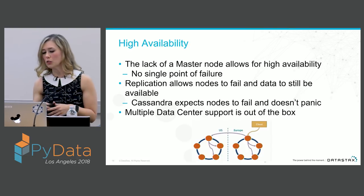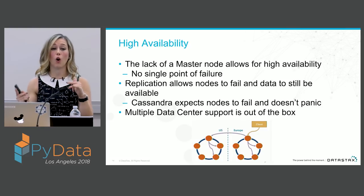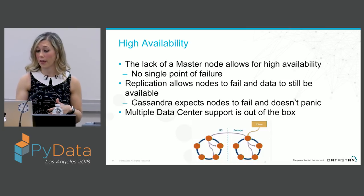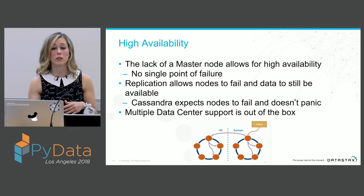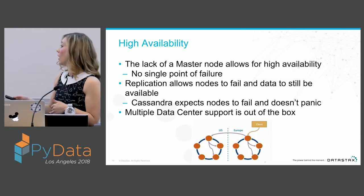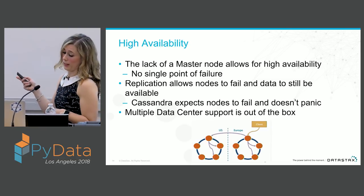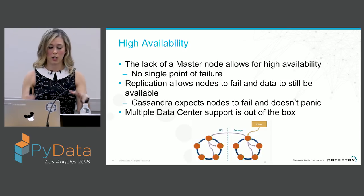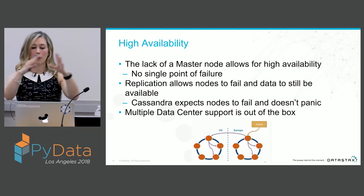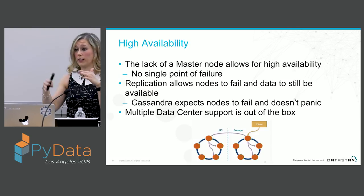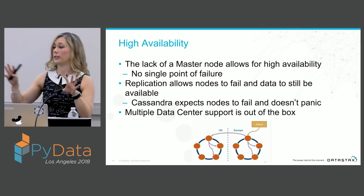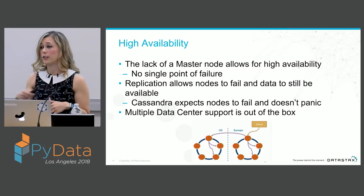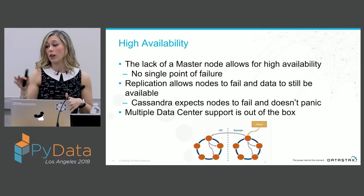High availability — this kind of database is for an application that needs to be always on. The lack of master nodes allows for high availability; there is no single point of failure. Replication allows nodes to fail and data to still be available. Cassandra expects nodes to fail and doesn't panic — it was built with this in mind. Also, right out of the box, we have multiple data center support. Nodes are individual servers; a data center is a collection of locally connected nodes; a cluster has multiple data centers, which could be in different regions or even across multiple cloud providers.